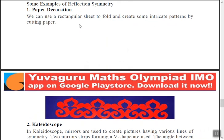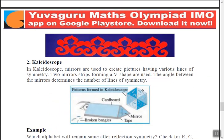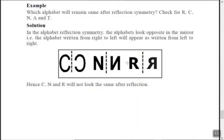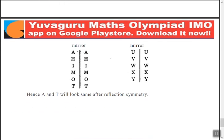A few more examples of symmetry: paper decoration or sari border decorations always have symmetry. Then the kaleidoscope — in older times children used to make these with glass and bangles, which were symmetrical. Also, letters like C, C, N, N — if you put a mirror here it looks the same — and R, R, and letters A, H, I, M, O, T, U, V, W, X, Y are all symmetrical figures.